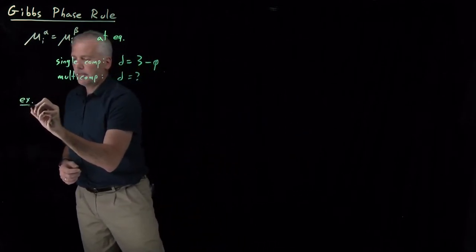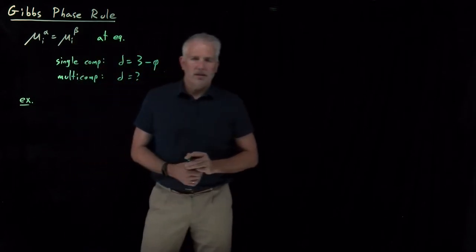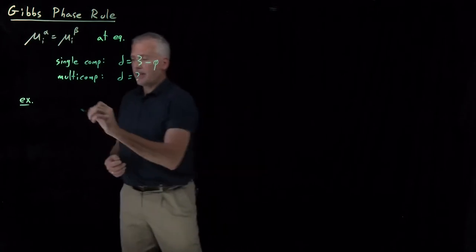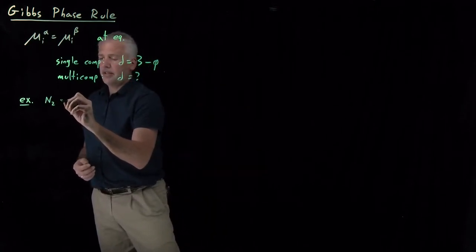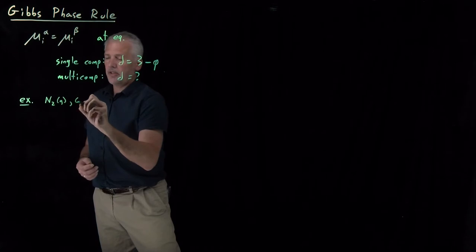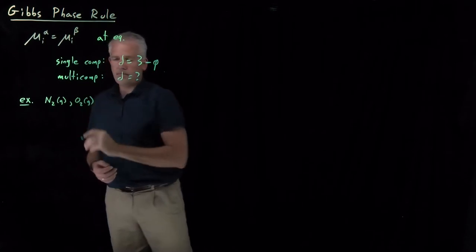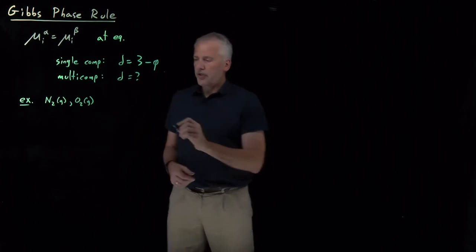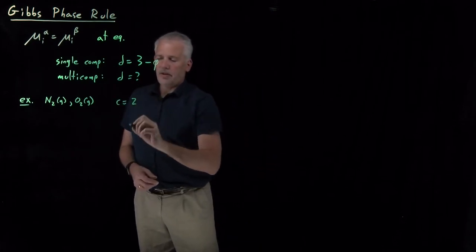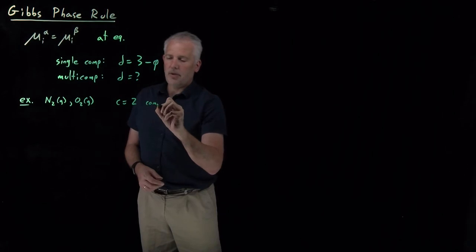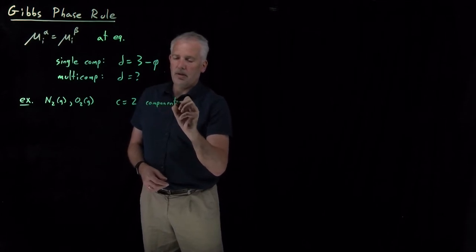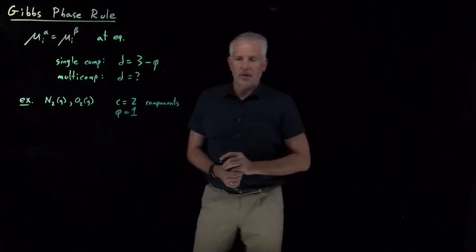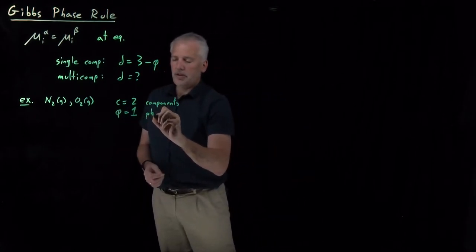Let's start with a few examples to make sure it makes sense. Let's take an example like air — I'll assume that air is a mixture of nitrogen gas and oxygen gas, ignoring the other components. That's a system with two components, N₂ and O₂, and just one phase. There is no coexistence with its liquid; it's just the gaseous phase.